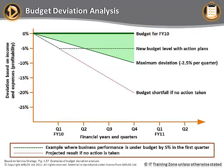Anything above that line means that profitability is more than was expected; anything below means that it is less than expected. A deviation in either direction could indicate a problem. We have simplified this diagram by only showing negative deviations — check out your study guide for an example that shows both positive and negative deviations.